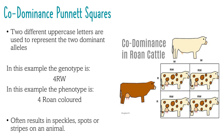Codominance means that two alleles are expressed equally, meaning they are both dominant. An example of this is human blood type — both blood type A and B are dominant, which is why a person can express blood type AB. When constructing codominant Punnett squares, two uppercase letters are used to represent each dominant allele. In the example of codominance in coat colours in cattle, both white and red coat colour are dominant and equally expressed. When a homozygous white cattle mates with a homozygous red cattle, the offspring will be a mixture of both, called roan colour. Codominant characteristics can be observed as speckles, spots or stripes in an animal.